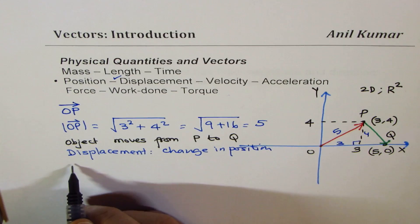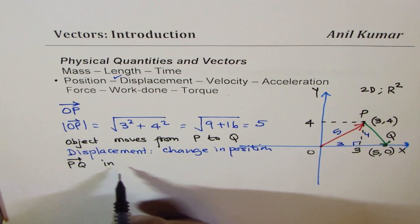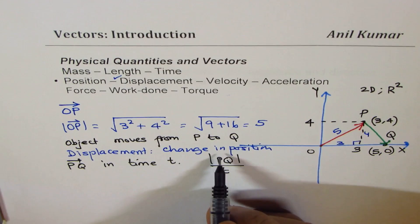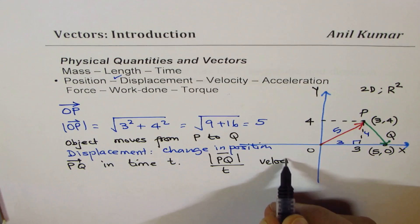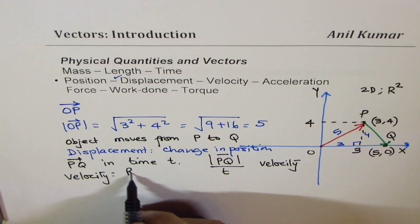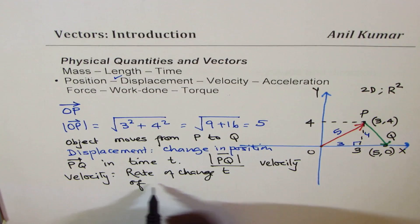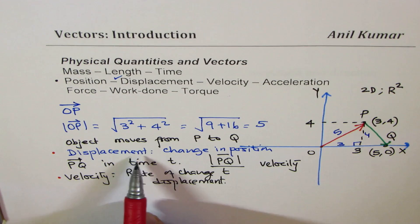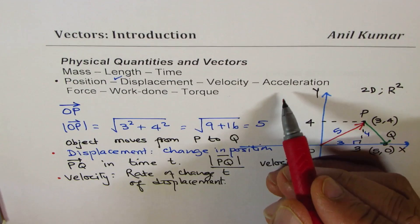Let's say the object moves from P to Q in time T. Then the displacement PQ divided by time T — the magnitude of PQ displacement divided by time — will give us velocity. Velocity is basically rate of change of displacement. So velocity is rate of change of displacement, and displacement is actually change in position.